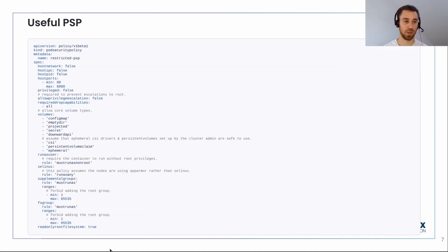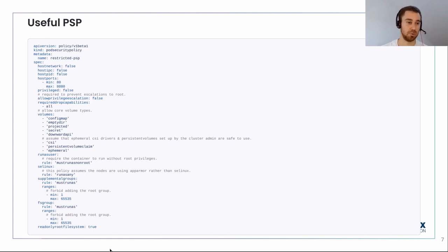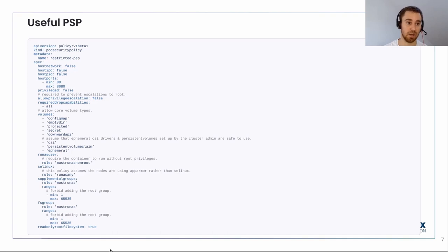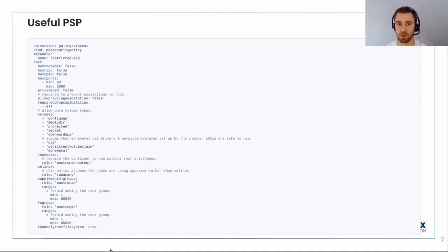Here is a more useful PSP example. We can see that containers cannot be privileged, we are dropping all Linux capabilities, and we are only allowing some specific volumes. It also allows specific ports to be open inside that pod — from port 80 up to 8080. Once we have the PSP, we just deploy it and we're done — but not really. Let's see how it gets applied.